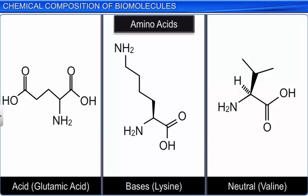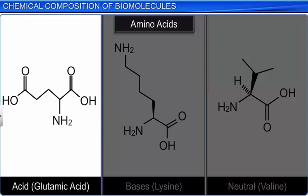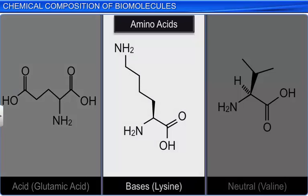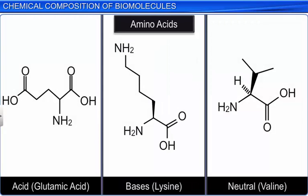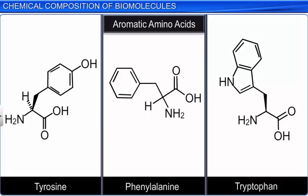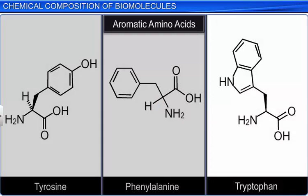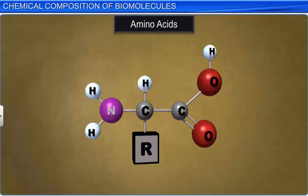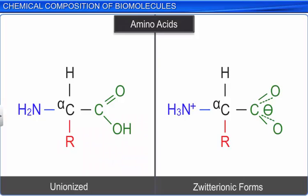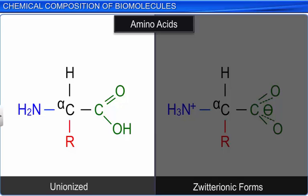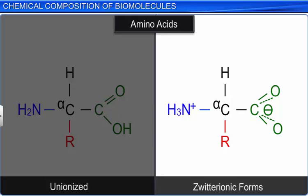As amino acids contain both the amino group and carboxyl group, they can be acidic such as glutamic acid, basic as in the case of lysine, and neutral like valine. Similarly, there are aromatic amino acids such as tyrosine, phenylalanine, and tryptophan. A unique property of amino acids is the ionizable nature of the NH2 and COOH groups. Amino acids behave as both bases and acids. In solutions, at a particular pH, ions with both positive and negative charges are equal — this form is known as the zwitterionic form.